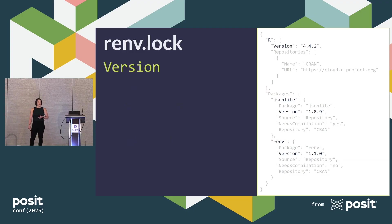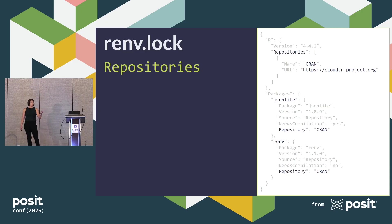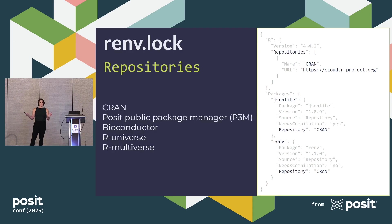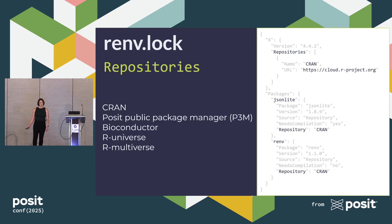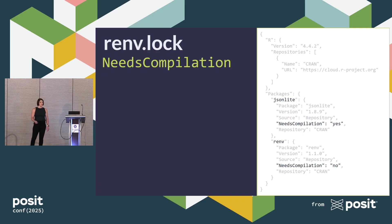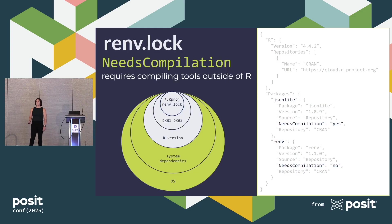The renv lock is a JSON file containing information from installed packages' description files. It contains information about the versions of R, JSON Lite, and RNV. It contains information about repositories — that's where you actually installed your package from. If you haven't done any configuration, your default repository probably points to CRAN at the URL cloud.r-project.org. There are other repositories you can install from, and we'll be talking more about the Posit Public Package Manager, or P3M. The lock file also has a field called 'needs compilation.' JSON Lite says needs compilation is yes, and RNV says no. This means it requires compiling tools outside of R, touching system dependencies and operating system — layers that RNV does not touch.